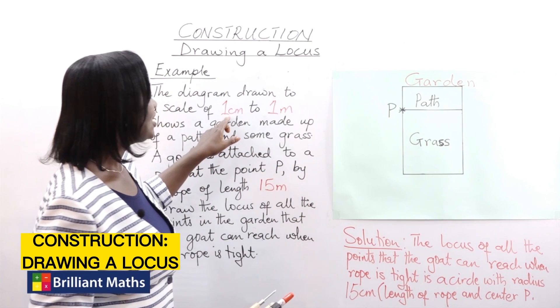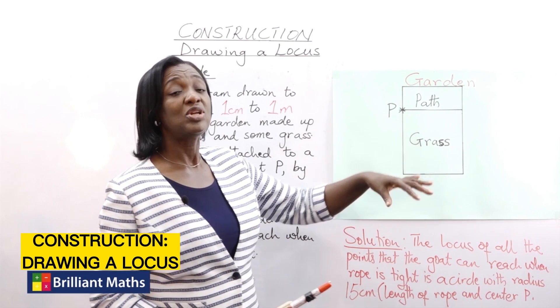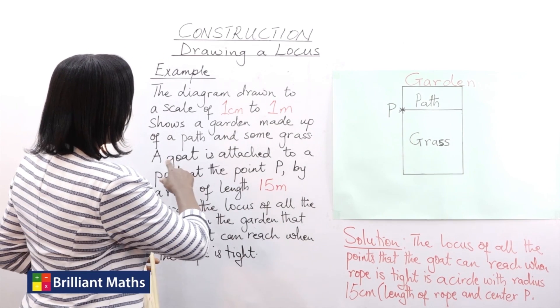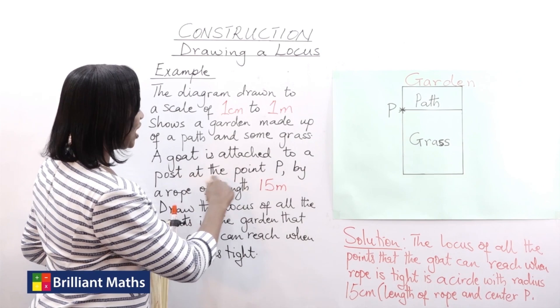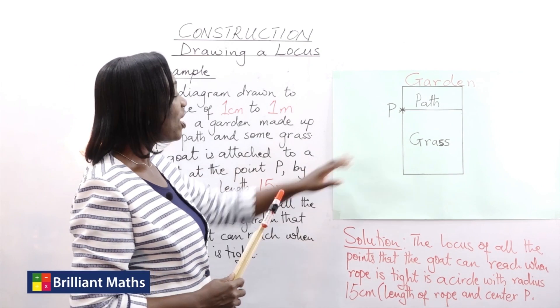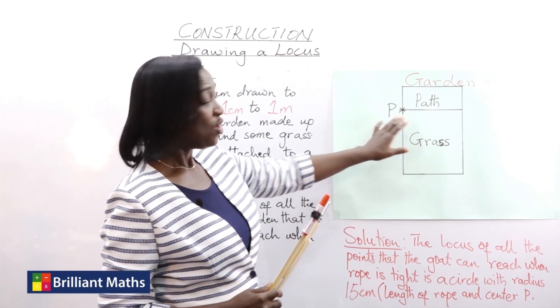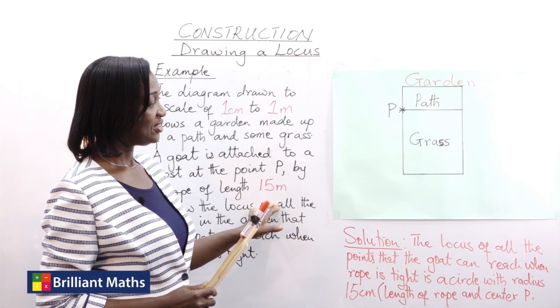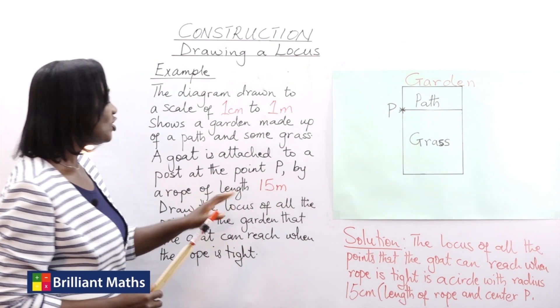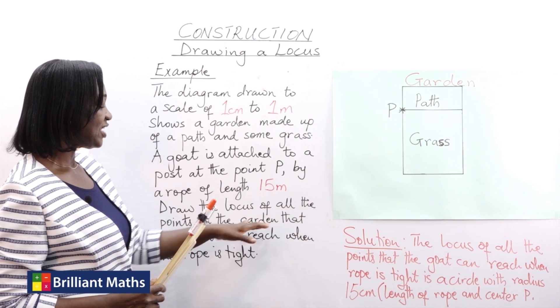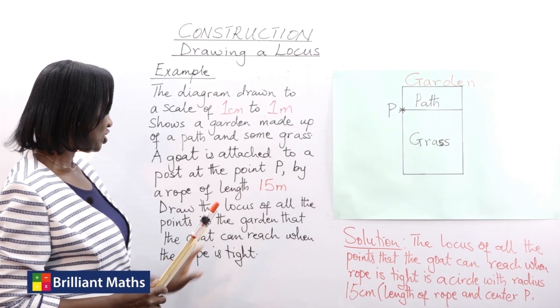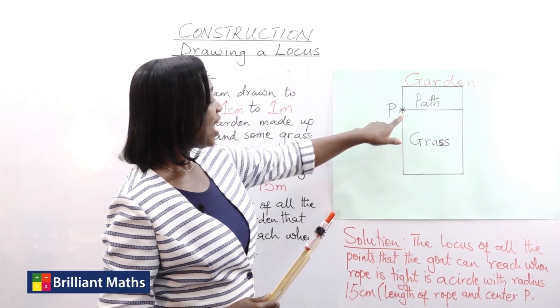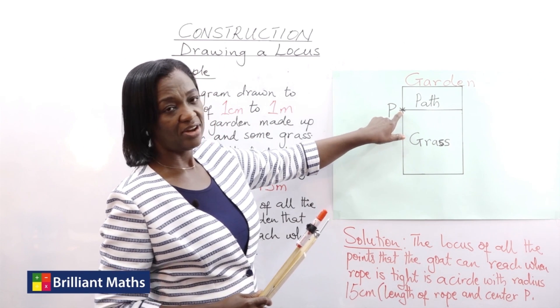One centimeter on this garden is actually one meter in real life. So a goat is attached to the post at point P. At this point we have the goat tied with a rope of length 15 meters. Draw the locus of all the points in the garden that the goat can reach when the rope is tight. So the rope is 15 meters and the goat is tied here.